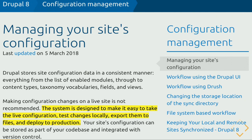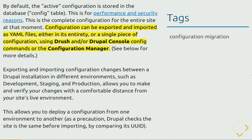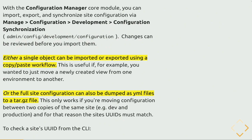Here's my first sign of confusion: configuration can be exported and imported either in its entirety or as a single piece using Drush and/or Drush console config commands or the configuration management UI. A single object can be imported using a copy-paste workflow — that does not sound right. Or the full site can be dumped as YAML files to a tar.gz file. The docs also say it's strongly recommended to do a database dump: 'It could save your life.' At this point, I know we are in for some real trouble.